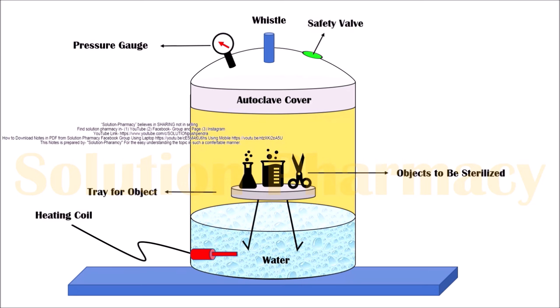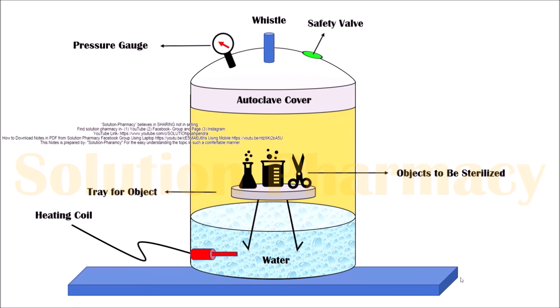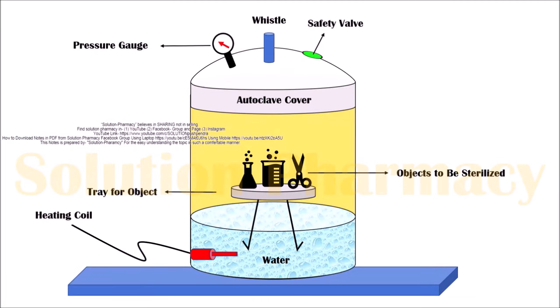This video is divided into two parts. In the first part we will know how to make a diagram, and in the second part how to add animation to that prepared diagram. As you can see on the screen, this is the diagram of an autoclave which is used for the sterilization of any object. This diagram is not taken or downloaded from anywhere — we have prepared this diagram by only using PowerPoint.